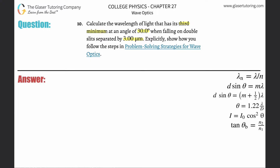We know we're dealing with a minimum, therefore we're dealing with destructive interference. We're going to use the formula on the right-hand side, the third one from the top. It says the distance between the double slits multiplied by the sine of the angle equals our m value — but you have to be careful — plus one half, multiplied by the wavelength.